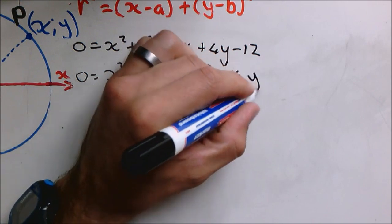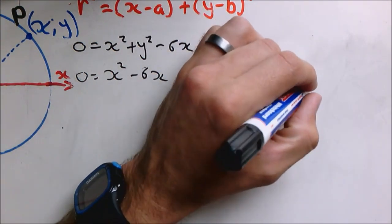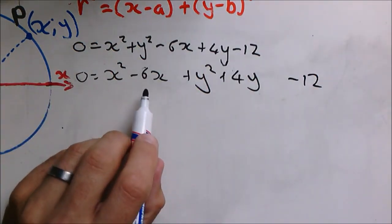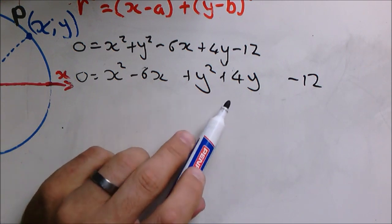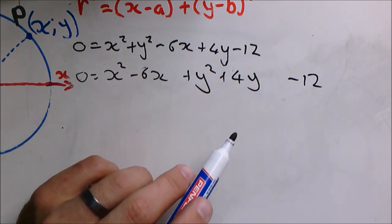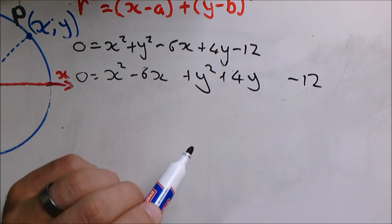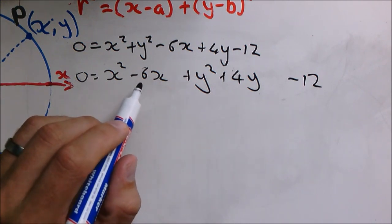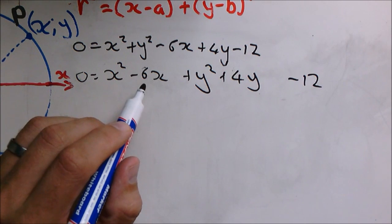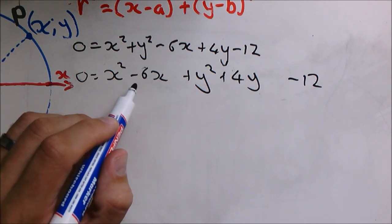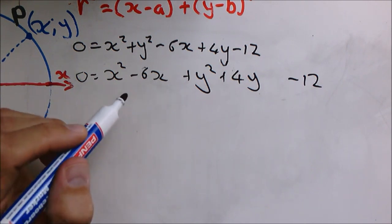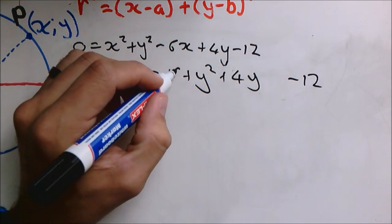Please note that I leave space open next to the negative 6x and next to the 4y because we're going to complete the square to get those numbers. So first of all, if b is negative 6, then b over 2 is negative 3 and b over 2 squared will then be plus 9.